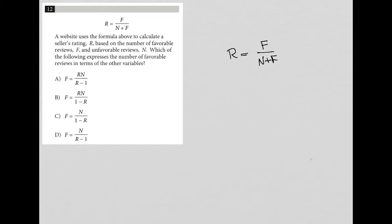Which of the following expresses the number of favorable reviews in terms of the other variables? So I want F equals, right? What does F equal in terms of R and N? So this becomes a very straightforward, simplified question. I want to isolate F.